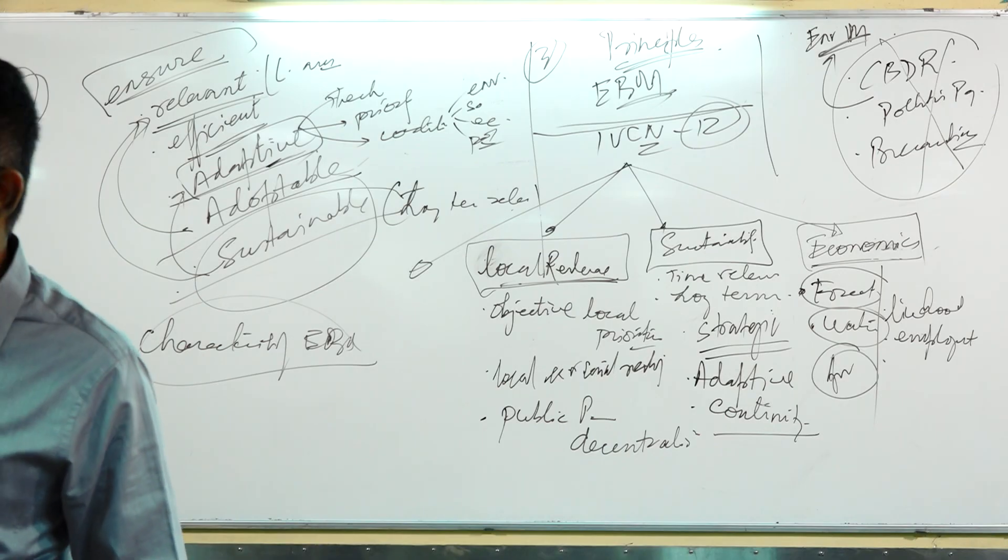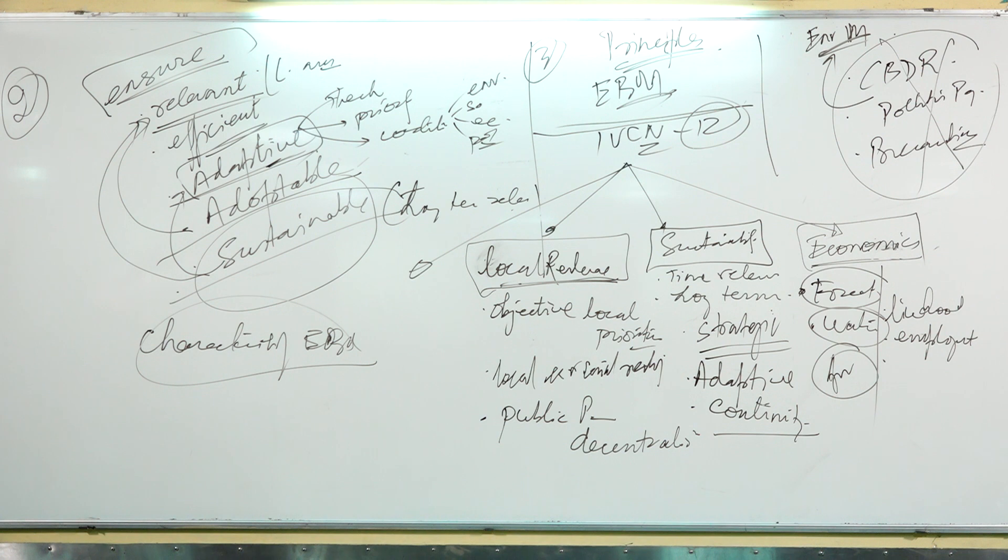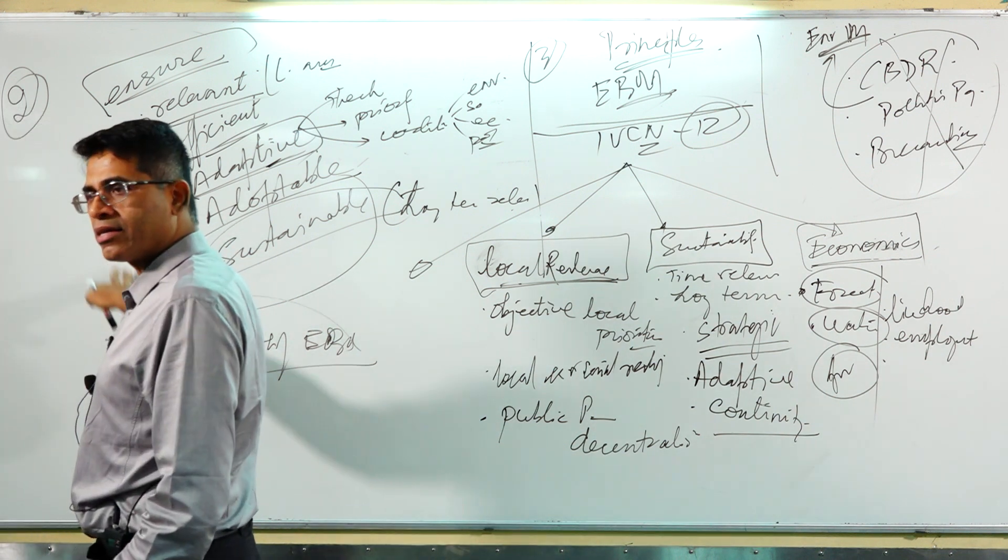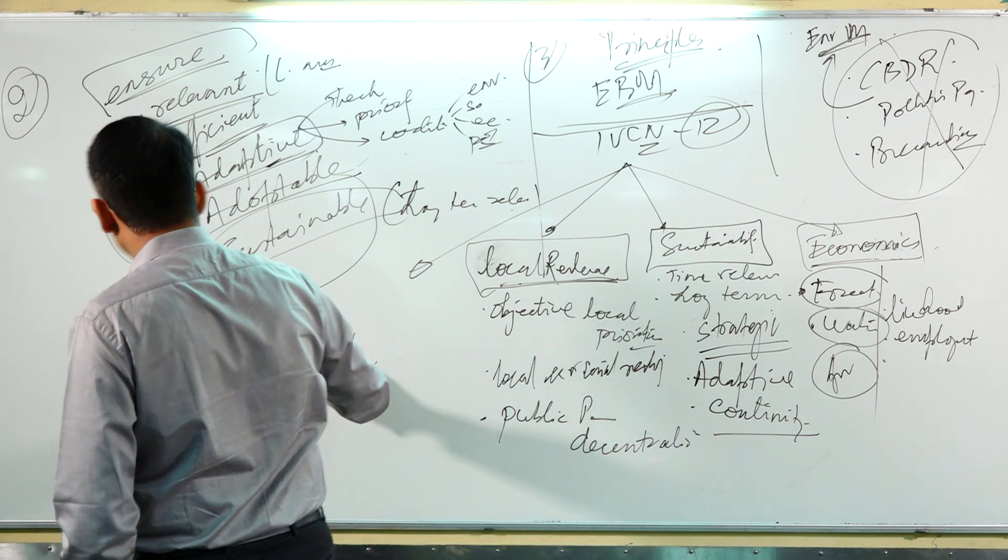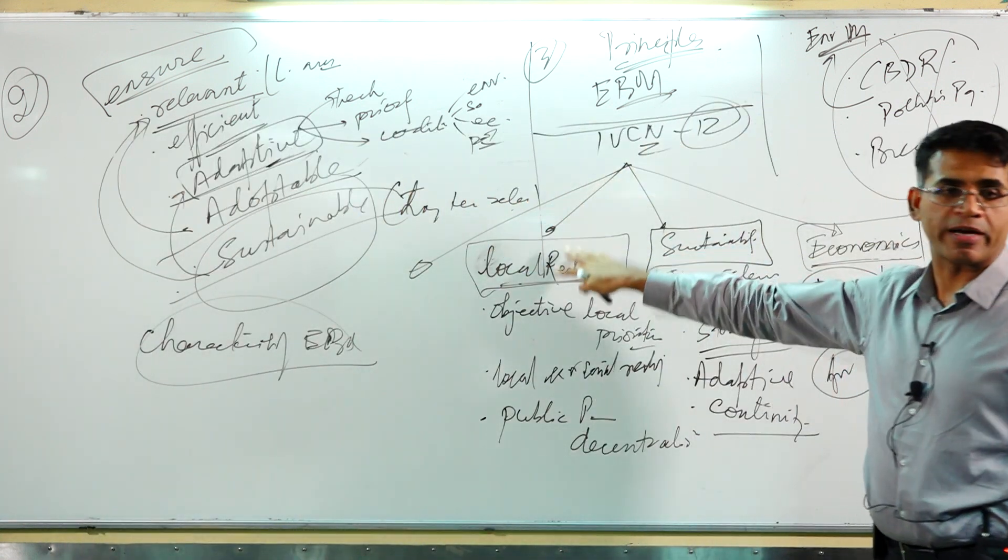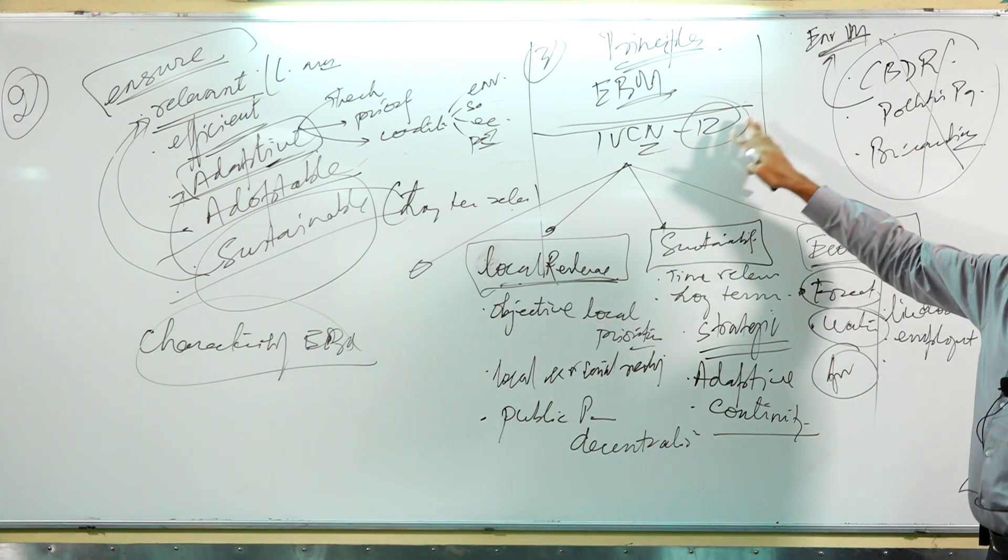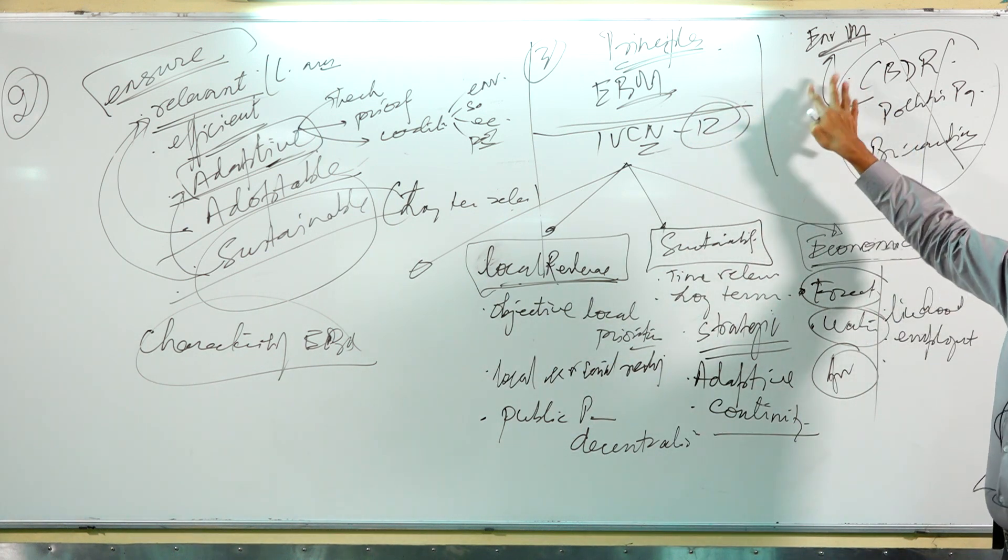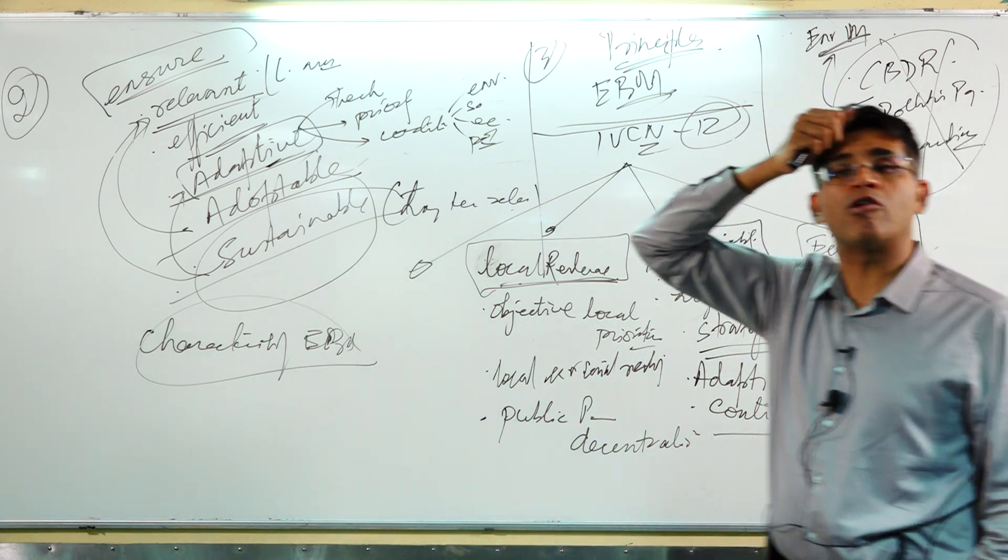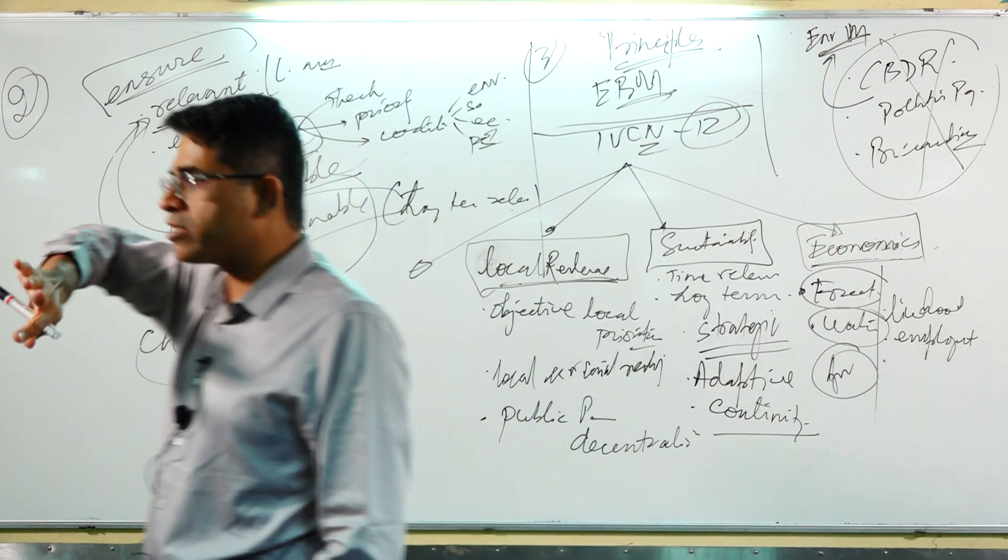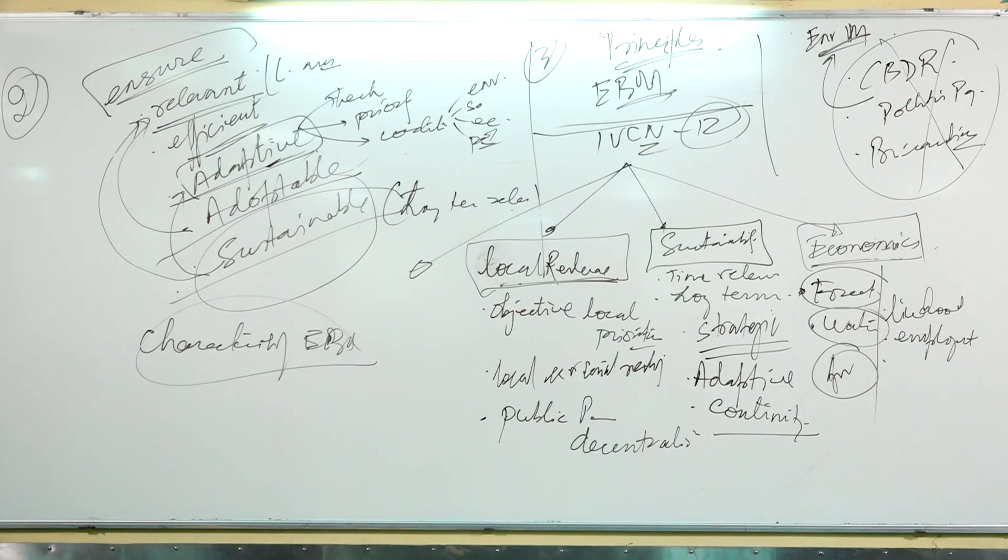So, what is ecosystem-based management, the definition? What is it trying to ensure? What are its characteristics? And what are the principles in which it operates? And be very careful to separate these two ideas. Environmental principles is not same as ecosystems principles.